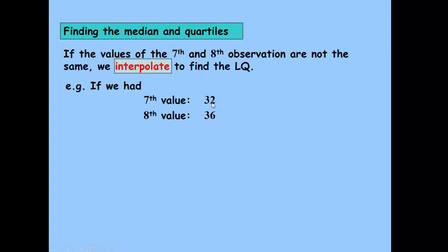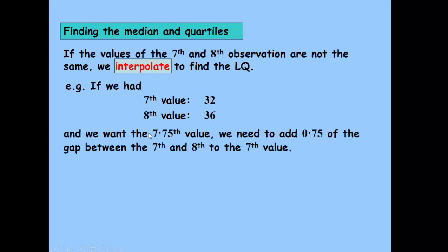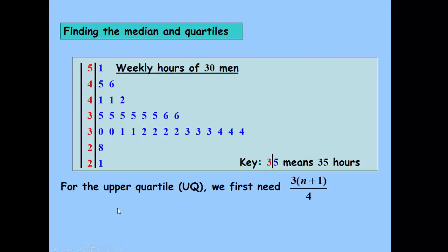For example, if we had that, to find that value, we would add three-quarters of the gap between them. So three-quarters of 4, which is 3. So we would get 32 plus 3, which is 35 for the lower quartile.